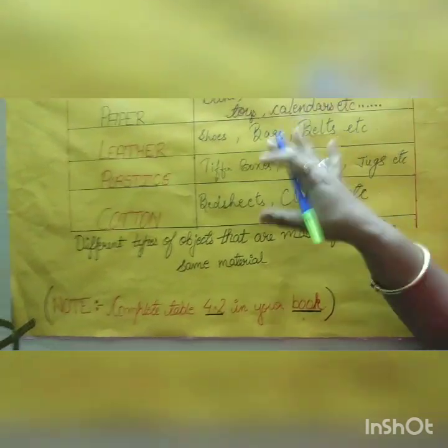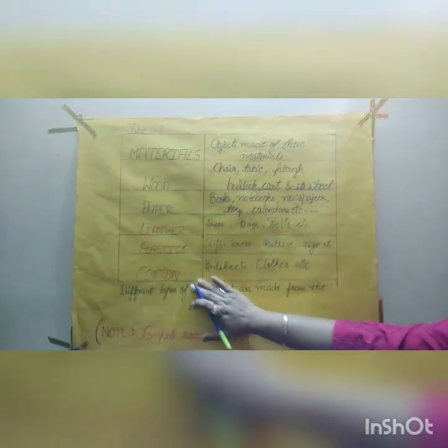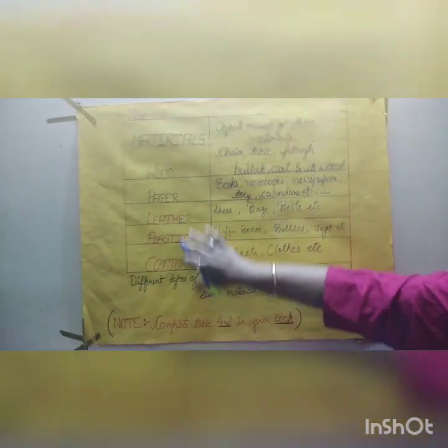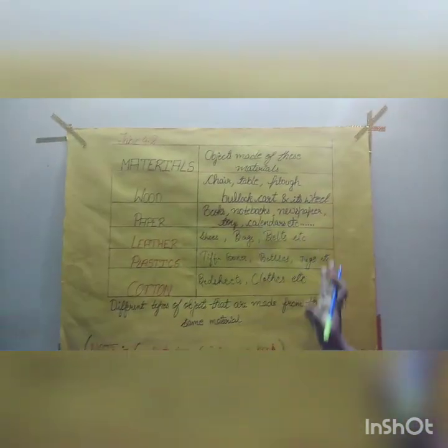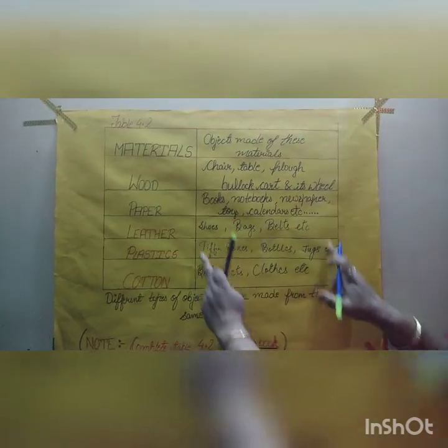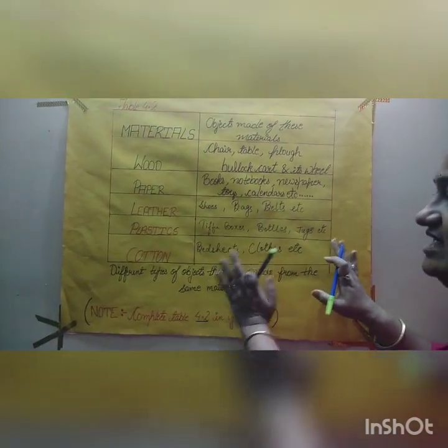If you have written anything different which is made from leather, plastic, or cotton, that's fine — it should only be things which are made from these materials. After reopening I will check your copies and confirm if it is correct or wrong. If you haven't written, you can copy down all the objects made from these materials by taking the examples I gave you.